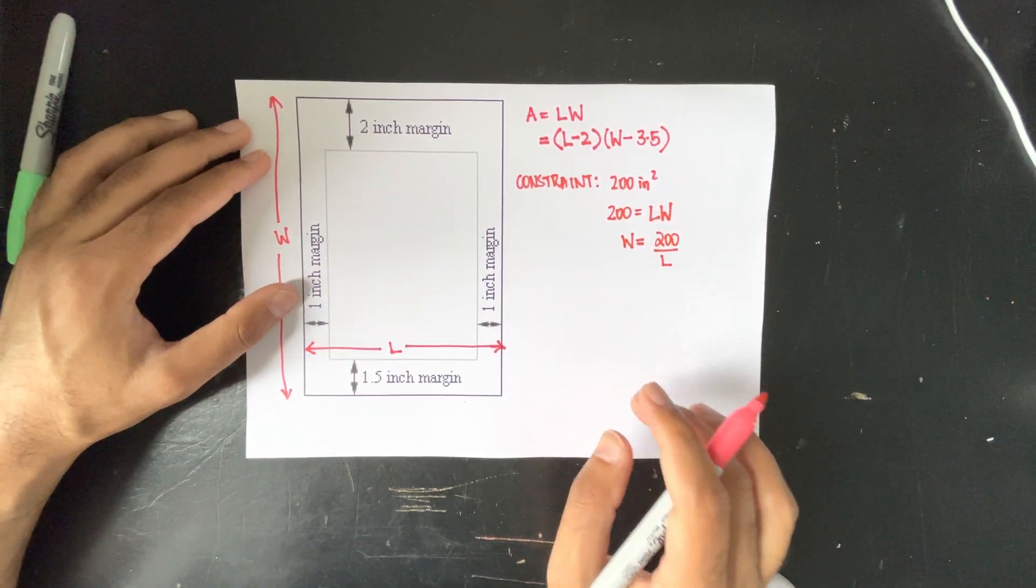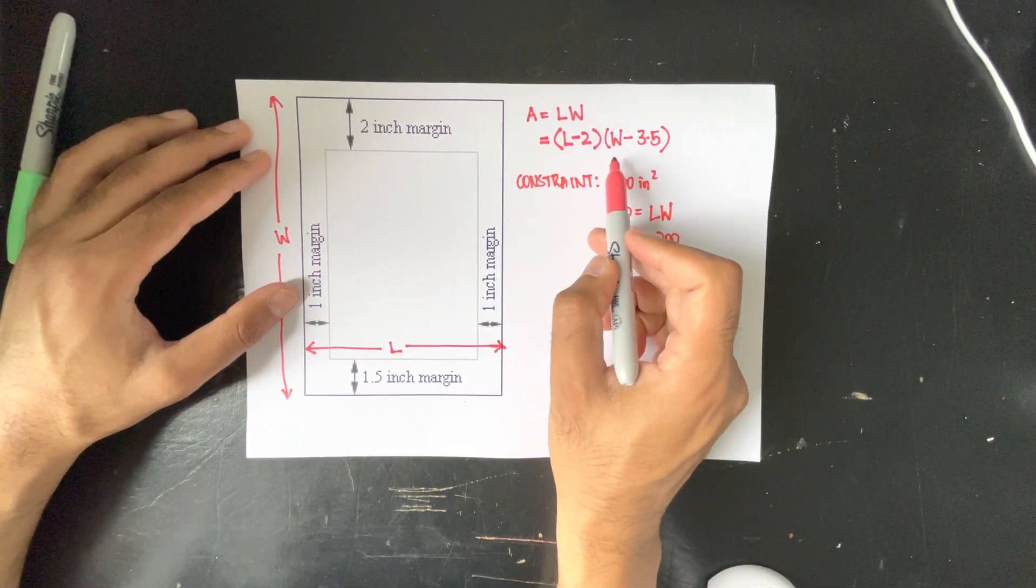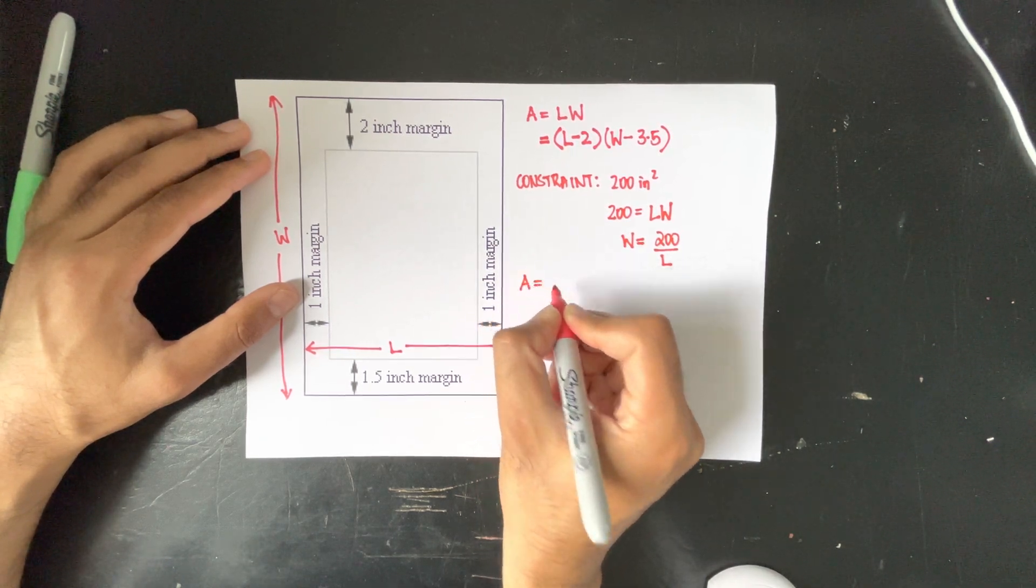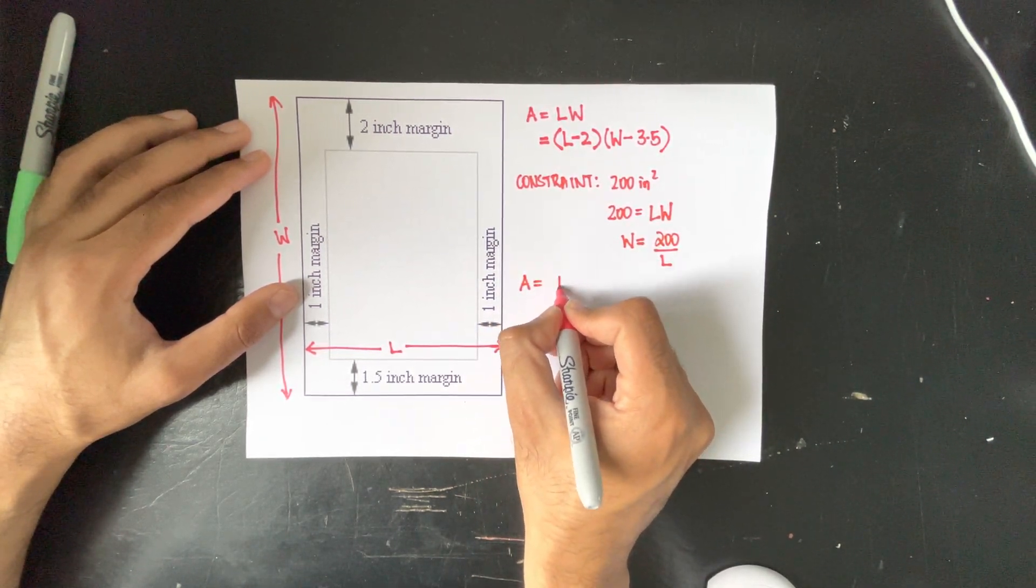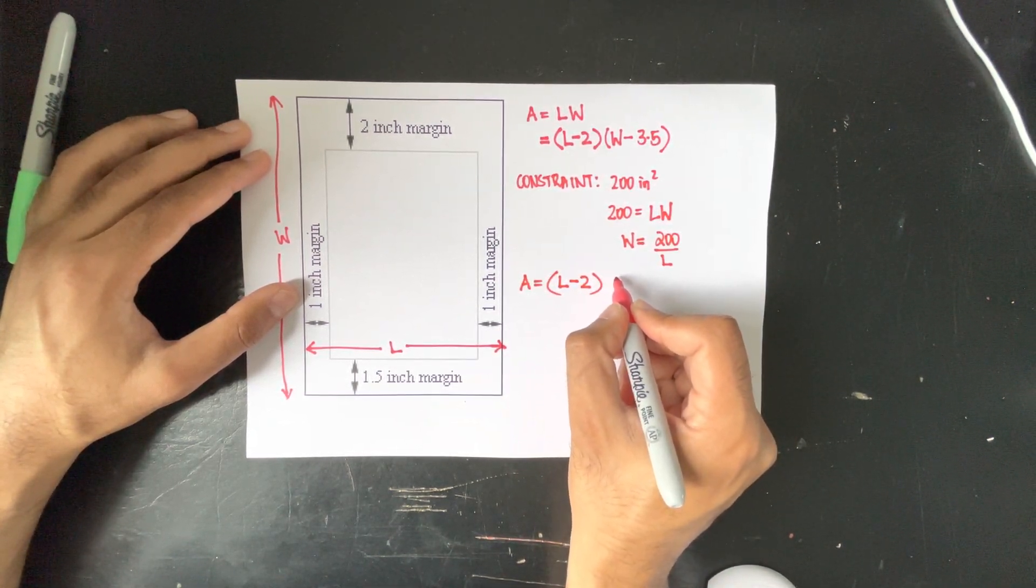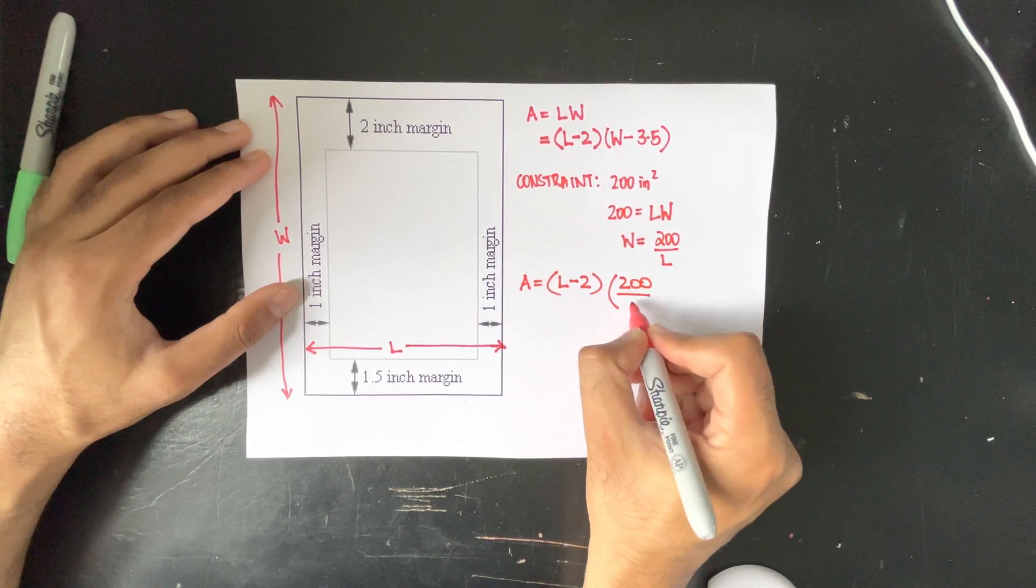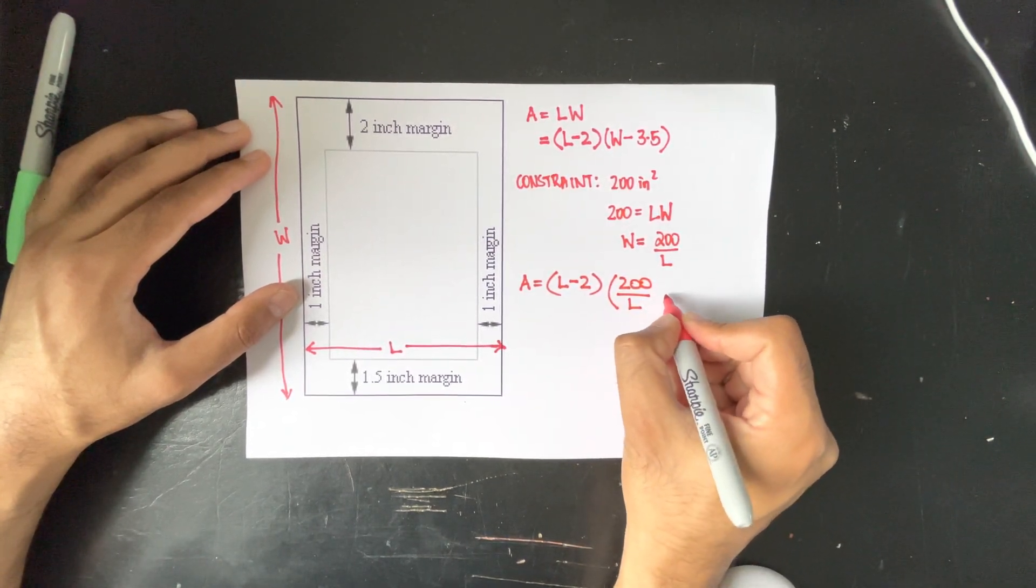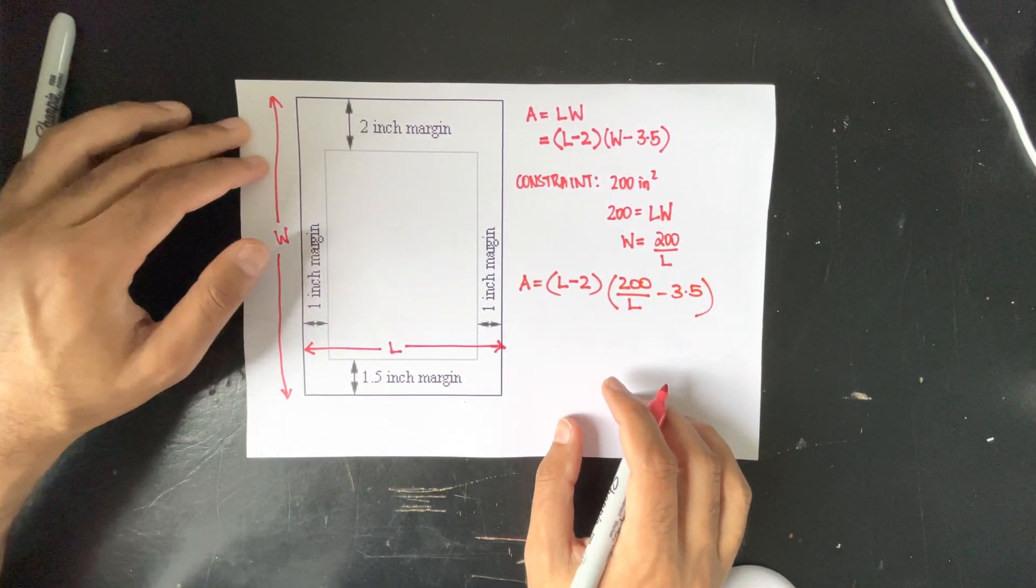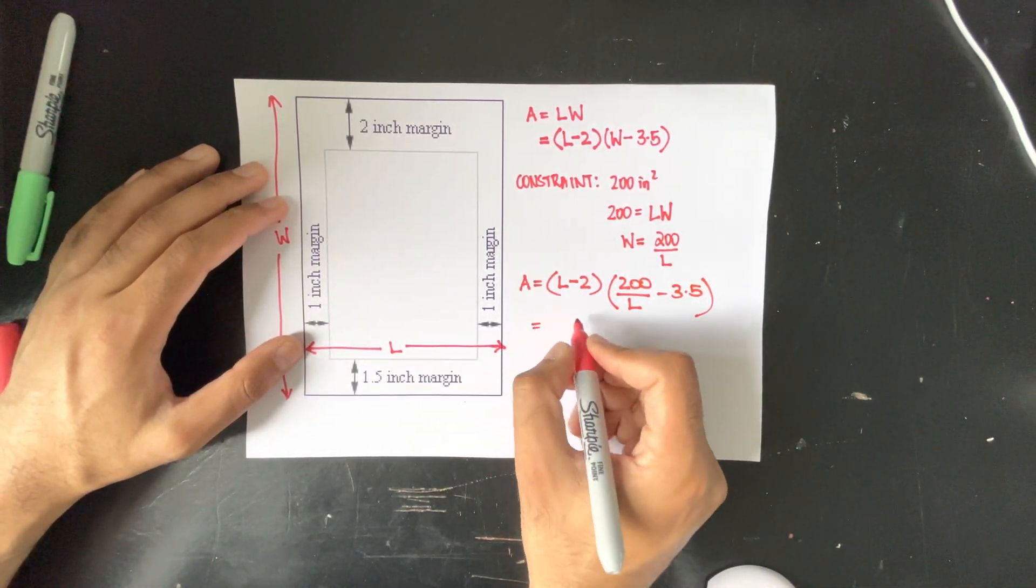Now we can put W equals 200 over L into this function up here to get the following: L minus 2 times 200 over L take away 3.5. Now I'm going to expand it and we will get 200 minus 3.5L minus 400 over L plus 7.